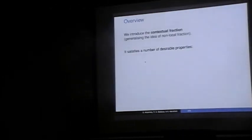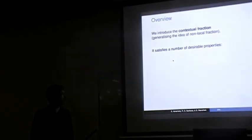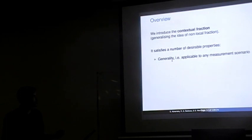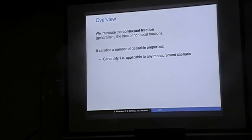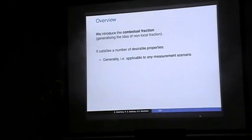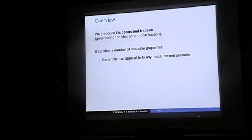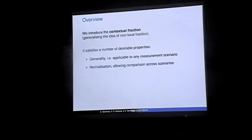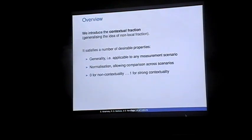The non-local fraction has been discussed before, in particular for 2-2-2 scenarios and the usual Bell scenarios. The contextual fraction satisfies a number of desirable properties. First, it's quite general — it's generally applicable to any measurement scenario. It's normalized, so you'll always have a value between 0 and 1, which allows you to compare it across different scenarios and as a measure of contextuality.